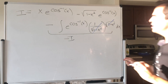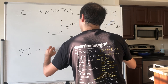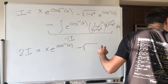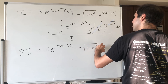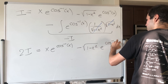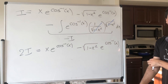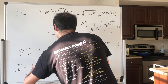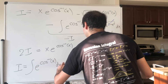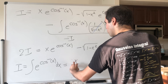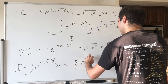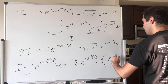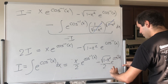In the end, we get 2I equals x·e to the arc cosine of x minus square root of 1 minus x squared times e to the arc cosine of x. So we just divide by 2. The final answer is: I equals x over 2 times e to the arc cosine of x, minus square root of 1 minus x squared over 2 times e to the arc cosine of x, plus a constant.